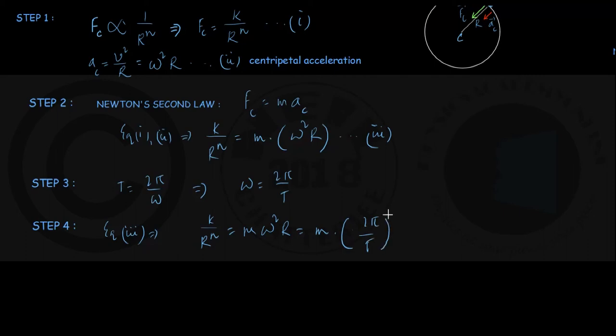This is giving me 4π squared m into r by t squared.